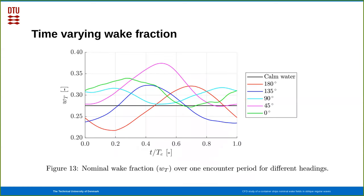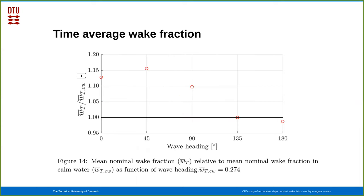We can plot this for different headings as a function of the encounter period, and we see up to 39% variation in the nominal wake fraction compared to calm water, which is the black curve. So rather significant variation in the instantaneous wake fraction compared to the corresponding calm water. You can time average that, and you see that you have up to 16% variation on the average compared to the calm water solution. So rather significant variations if you consider how it was designed.